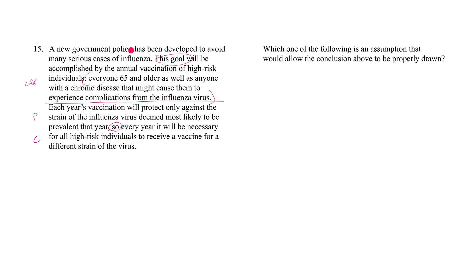Here is the actual argument. We're told that every year the vaccine protects only against the strain of the flu virus deemed to be the most prevalent that year. The conclusion is that every single year we have to give all high-risk individuals a vaccine for a different strain of the virus. But there's something missing — as is always the case, we need to build a bridge from the premise to the conclusion.